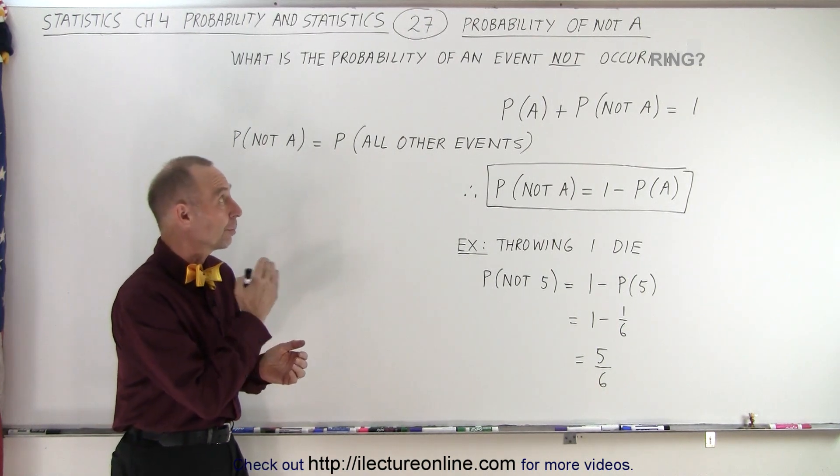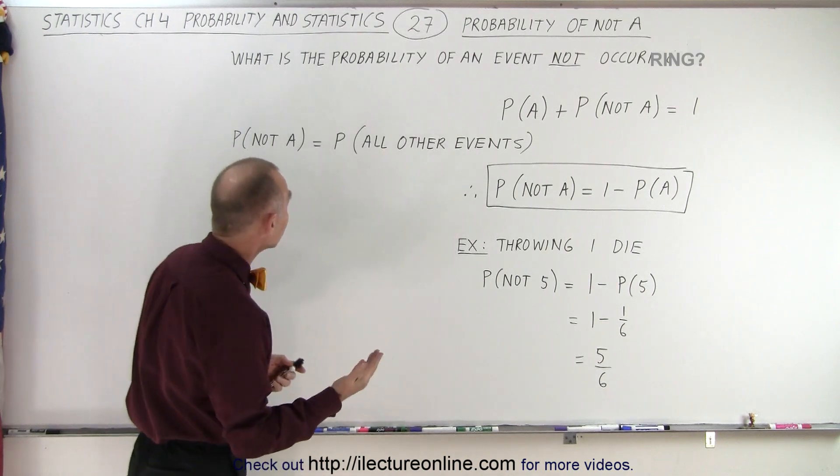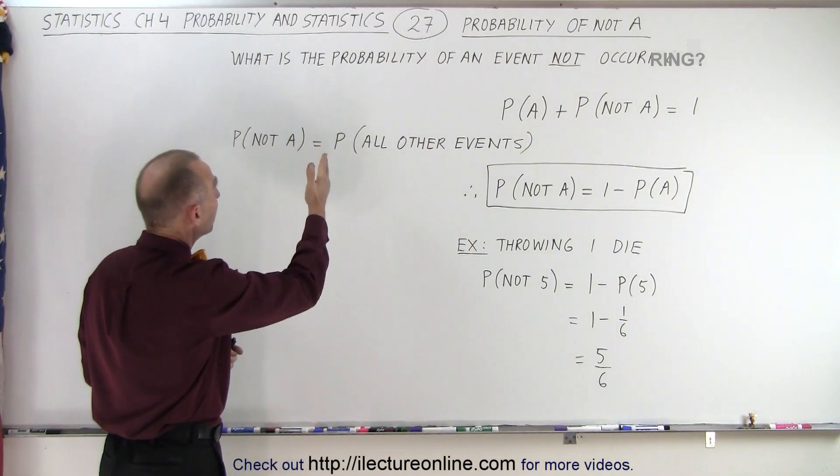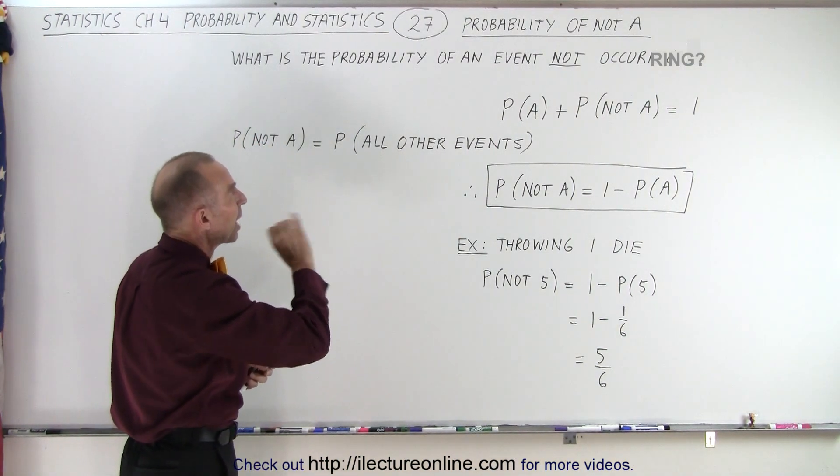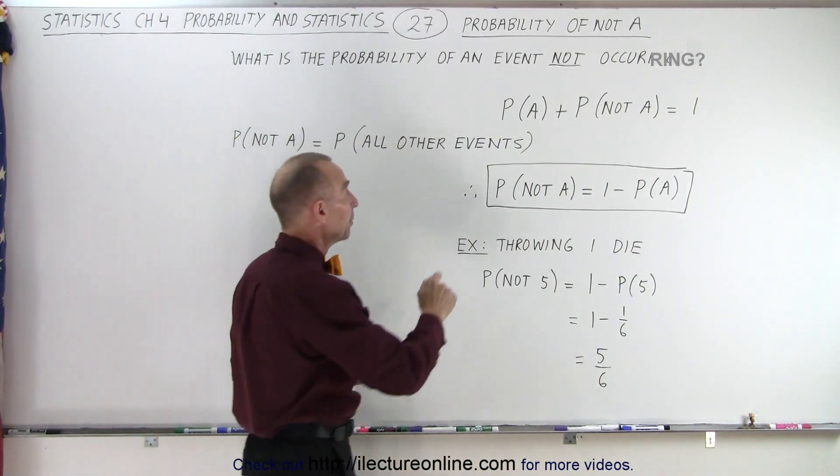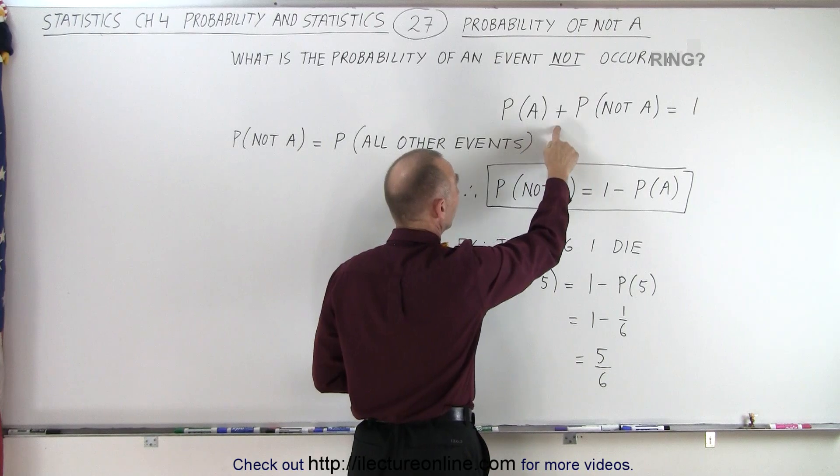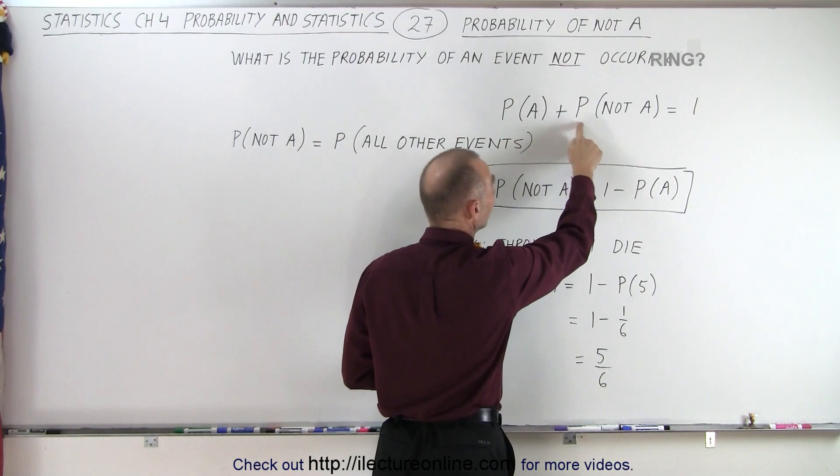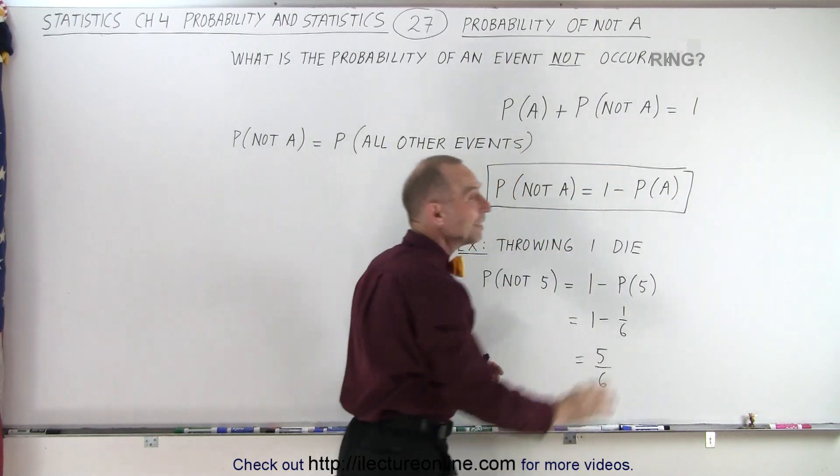For example, the probability of not A. So a way of looking at it is, what is the probability of an event not occurring? And what we need to keep in mind is that the probability of an event occurring plus the probability of an event not occurring always equals 1.